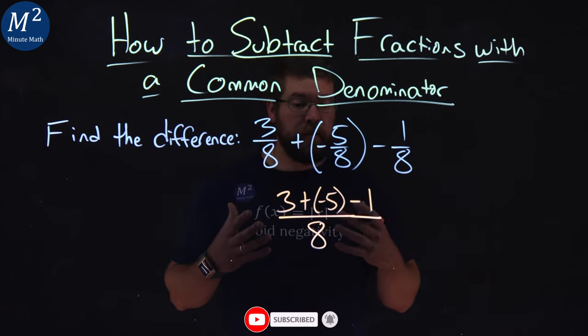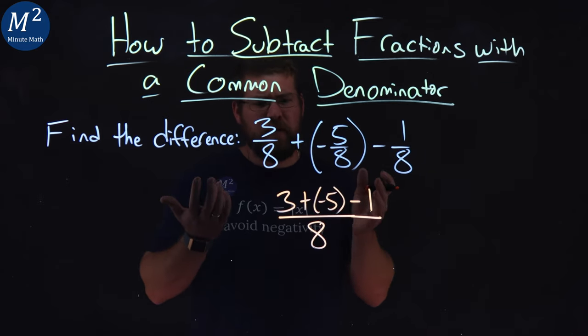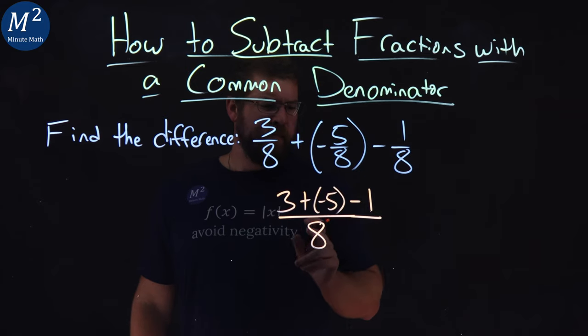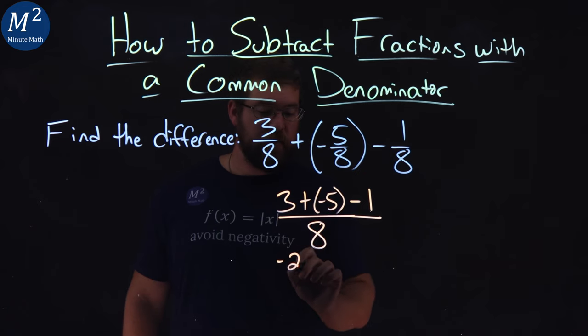From there, we just need to simplify. To simplify, we simplify the numerator. So, what do we have? Well, I have a negative 5 and a 3. 3 plus a negative 5 is a negative 2. Minus 1 comes down, over 8.